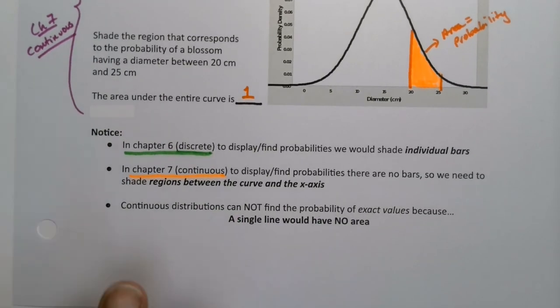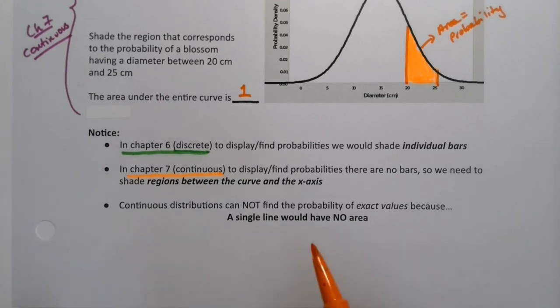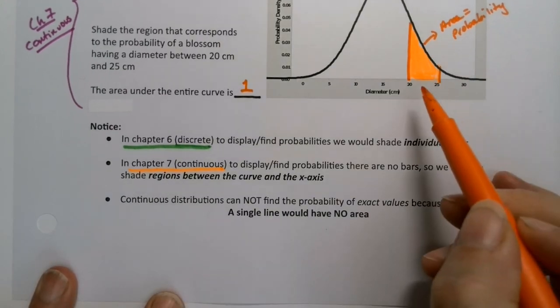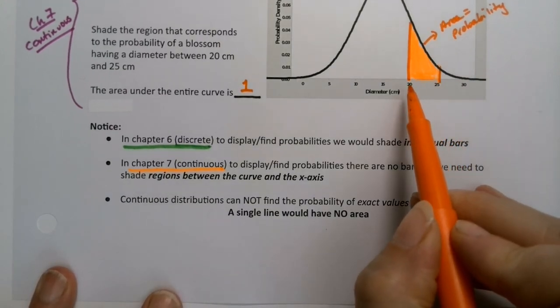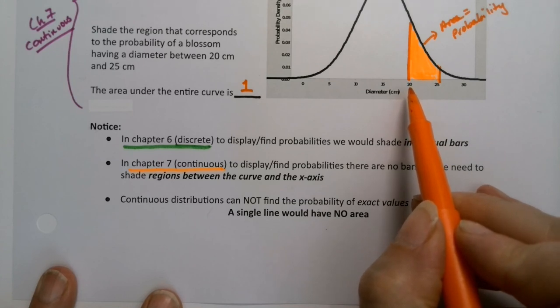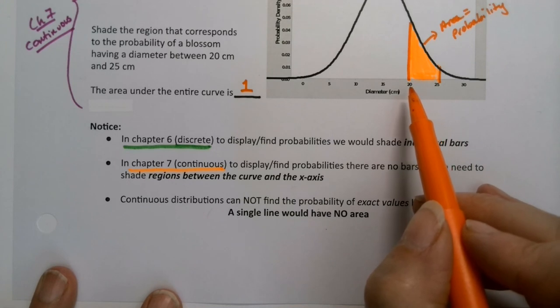There's one other interesting thing to note: a single line has no area. So the probability of exactly 20 centimeters is zero, because no rose is exactly 20 centimeters. It's 20.01324 centimeters.